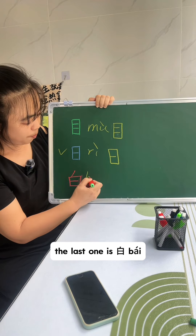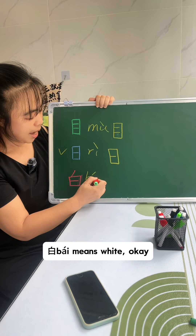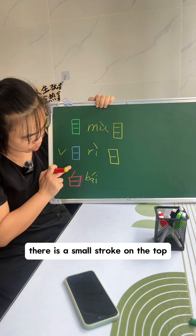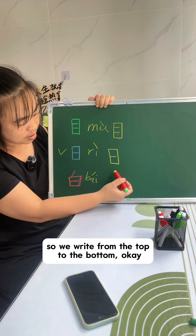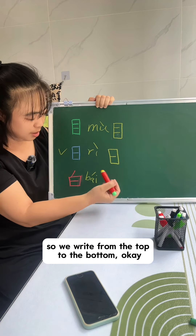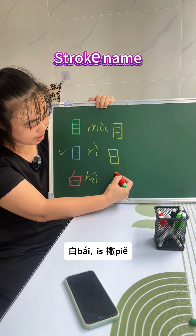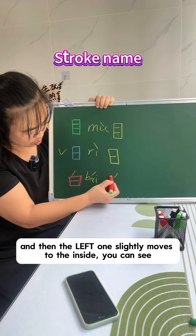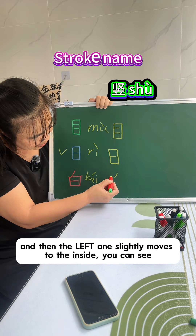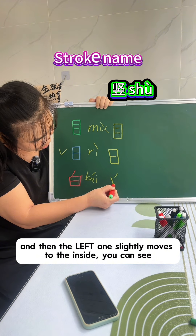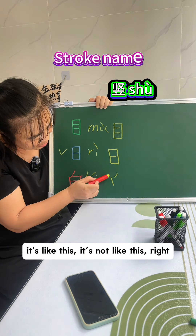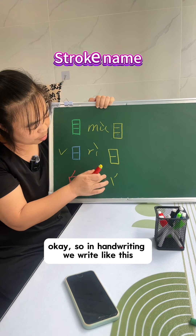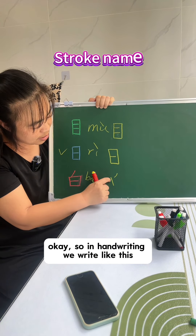The last one is 白. 白 means white. There is a small stroke on the top. We write from the top to the bottom. 白 starts with 斜, and then the right side slightly moves to the inside — you can see it's like this, not like this. So in handwriting, we write like this.